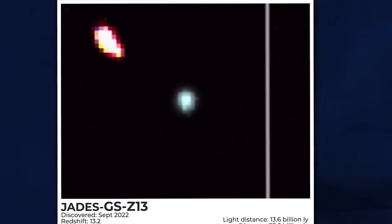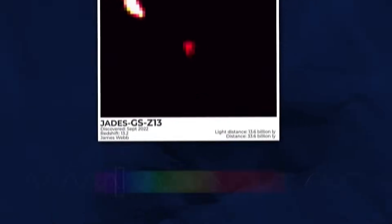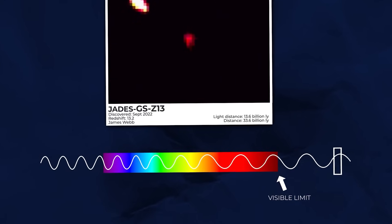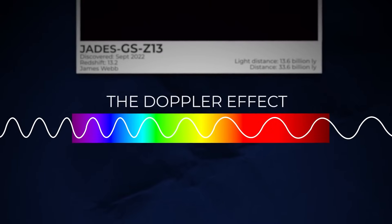The same is true of light. When a light source, such as a distant star, moves toward us, the light we perceive shifts towards bluer hues. On the other hand, when the light source moves away from us, the light shifts towards redder hues. This phenomenon is called redshift.